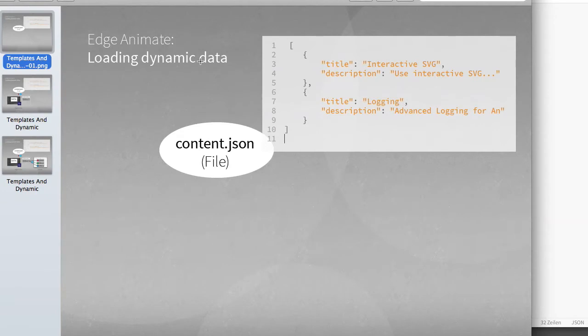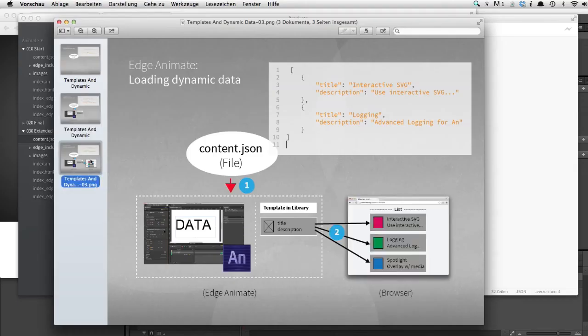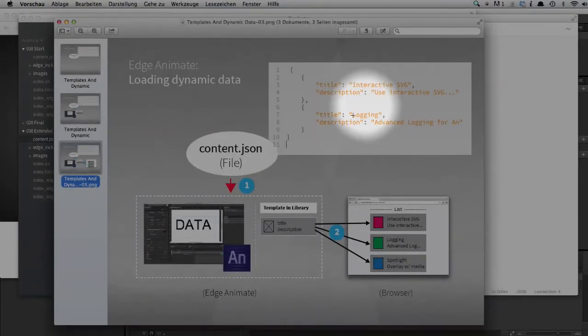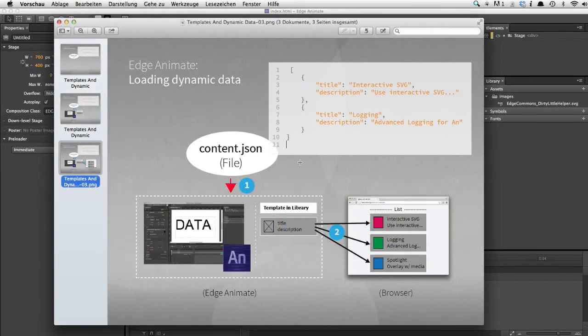Moving back to the sketch: in the first step, we want to use jQuery to load the content of the JSON file. Once that's done, we have the data structure as a JavaScript object within our Animate composition. Then we build a symbol in Edge Animate to serve as a template. We use a script to instantiate this template for each item in the data structure. In the final step, we use jQuery to map all items within the data object to the final list.